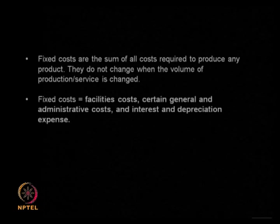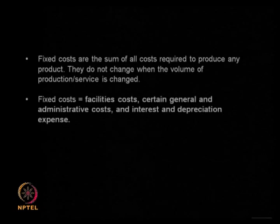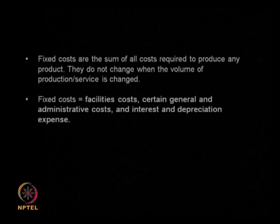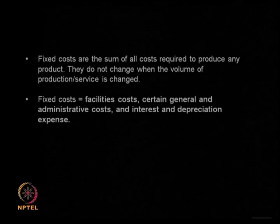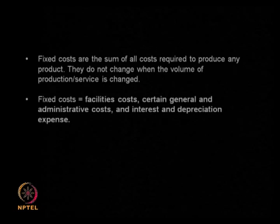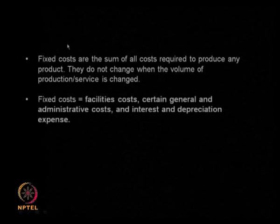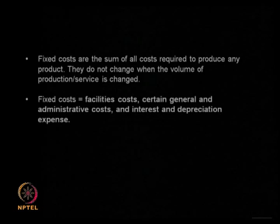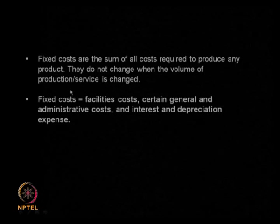Now, if you have something called a fixed cost and something called the operating cost or variable cost - what is a fixed cost? Fixed costs are the sum of all costs required to produce any product. They do not change if I change the volume of production. Whether I make 100 tons today in my plant or 125 tons tomorrow or 85 tons the day after tomorrow, fixed costs are always going to be fixed. The facilities I have - a building, administration, interest on the loan, depreciation expenses - all these are going to be fixed. Even if I do not make my product because there is a general strike, I still need to pay for all these. That is what is called the fixed cost.